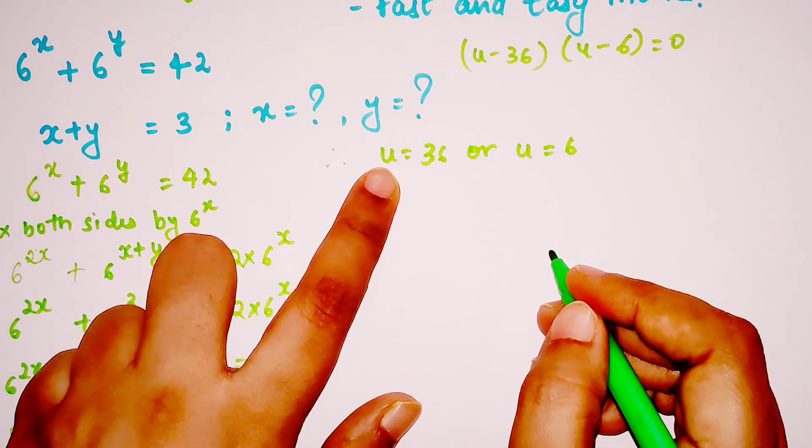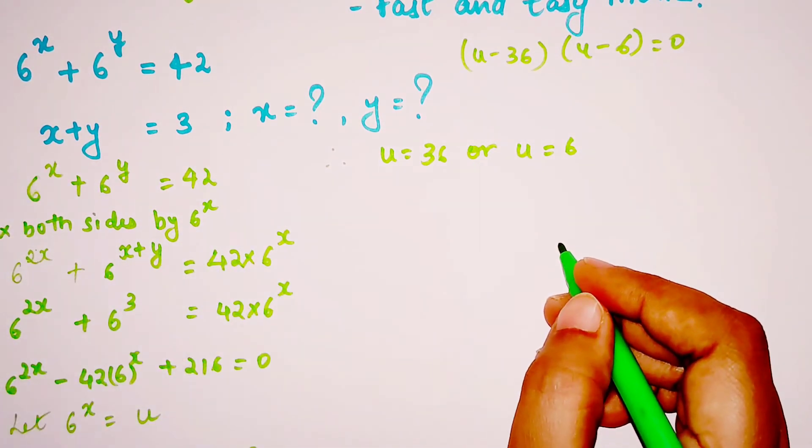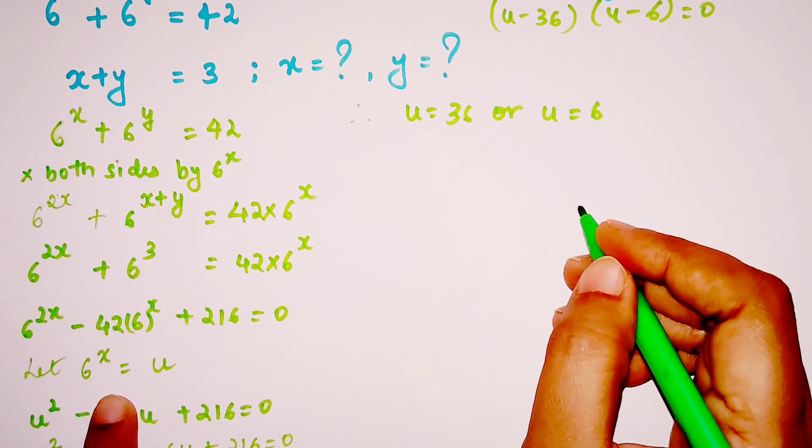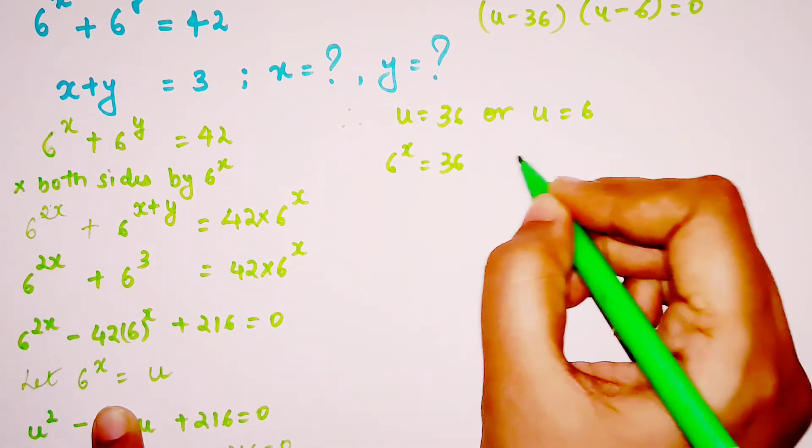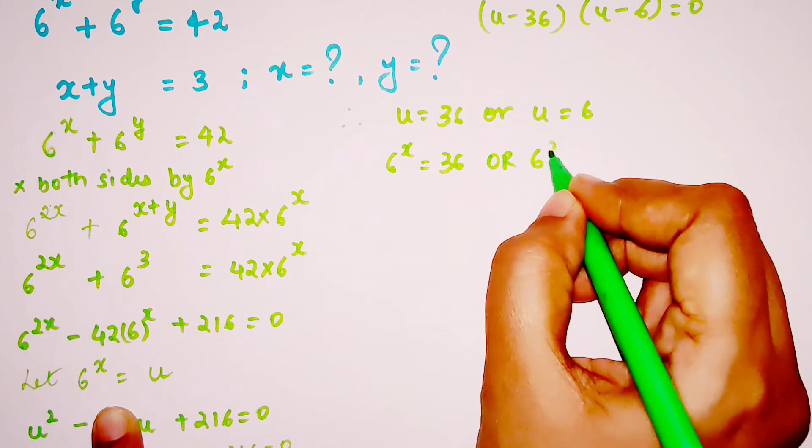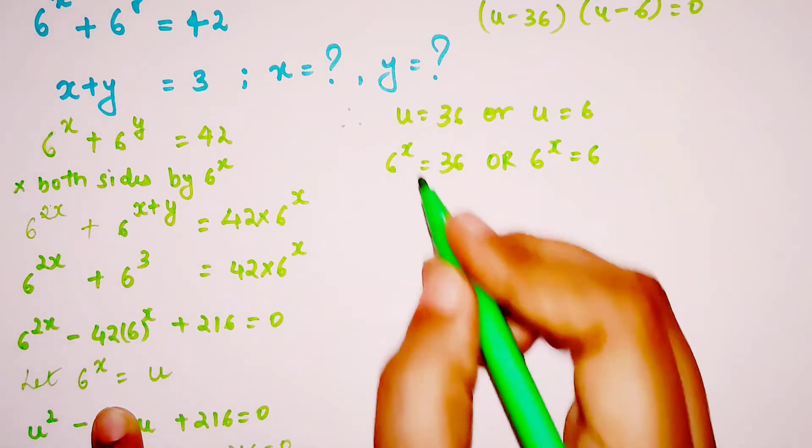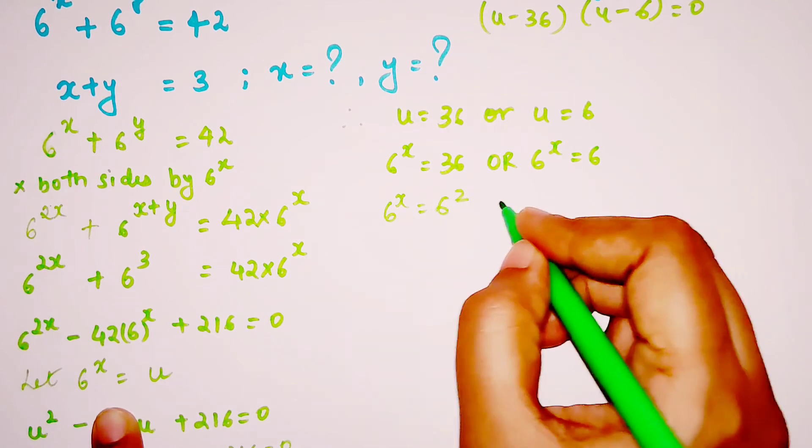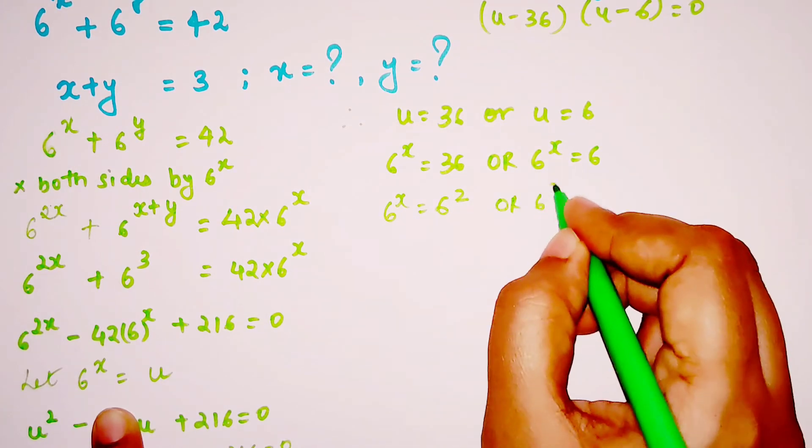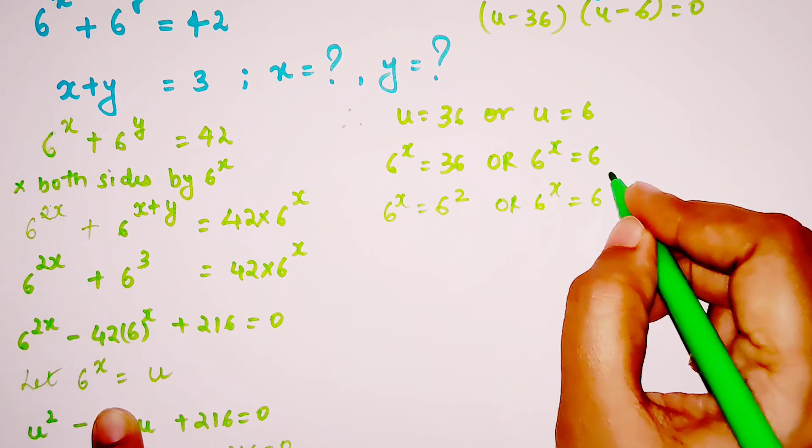Therefore u = 36 or u = 6. Now we know u was 6^x. So 6^x = 36 or 6^x = 6. From here, 6^x = 6² or 6^x = 6¹. Therefore x = 2 or x = 1.